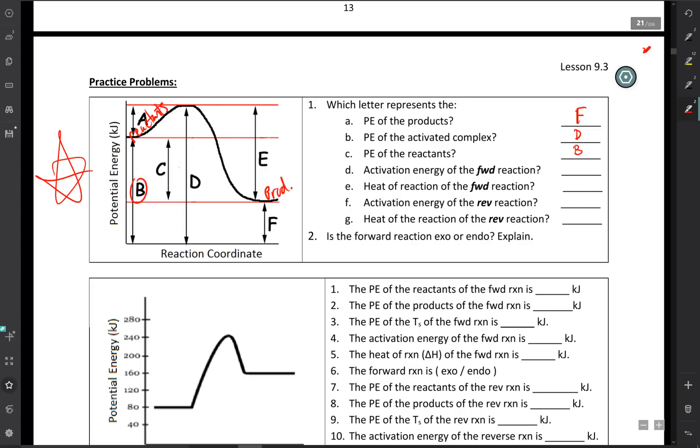The activation energy of the forward reaction. Okay. So if we're moving in the forward direction, so from reactants to products, the activation energy, that's the energy required to get to the transition state, it looks like that's going to be letter A for our forward reaction.